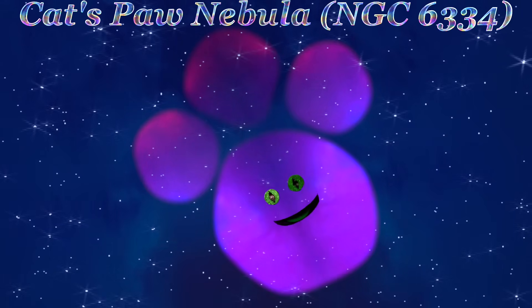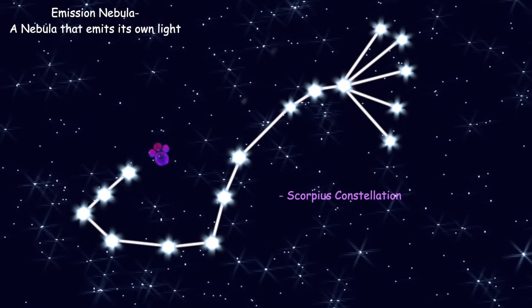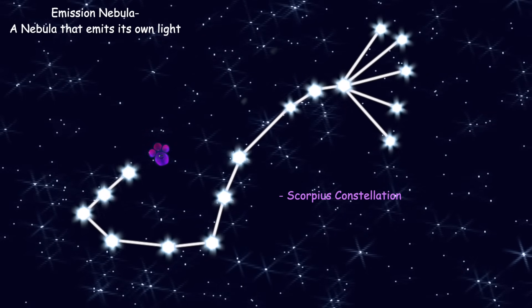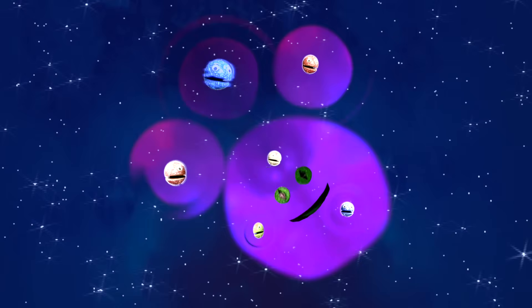I'm the Cat's Paw Nebula, NGC-6334. I look like the paw of a furry little feline friend, the kind you humans adore. An emission nebula and star-forming region in the constellation Scorpius, filled with young hot stars that are shaping the surrounding dust.